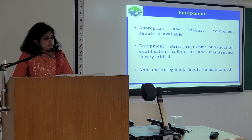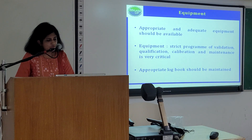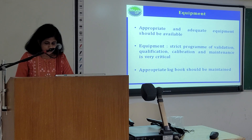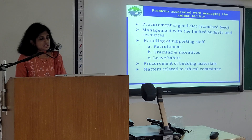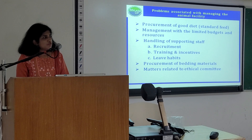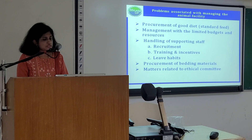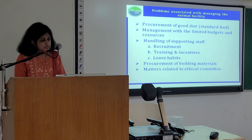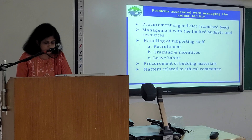For equipment, appropriate and adequate equipment should be available. A strict program of validation, qualification, calibration and maintenance is very critical. Appropriate log books should be maintained. The programs associated with managing the animal facilities include procurement of goods, food, diet and standard feed; management within limited budgets and resources; handling of supporting staff including their recruitment, training and incentives; procurement of consumable materials; and materials related to the ethics committee.